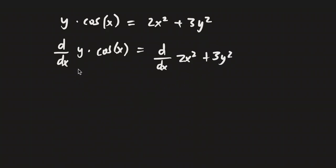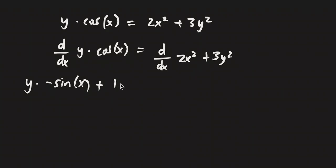Now we need to actually find the derivative of both sides. The left side is going to become — we need to use the product rule. So it's going to become y times negative sine x, which is the derivative of cosine x, plus the derivative of y which is just 1 times dy/dx. We've got to tag on that dy/dx since we're finding the derivative of a term that has y in it, multiplied by just cosine x.